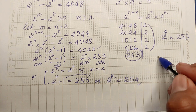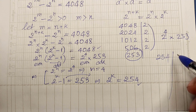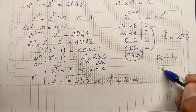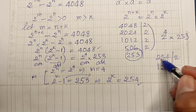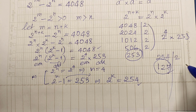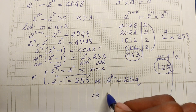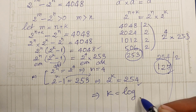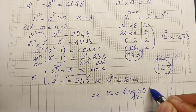We divide 254 by 2 to get 127, which is a prime number. So we can write k equals log base 2 of 254.